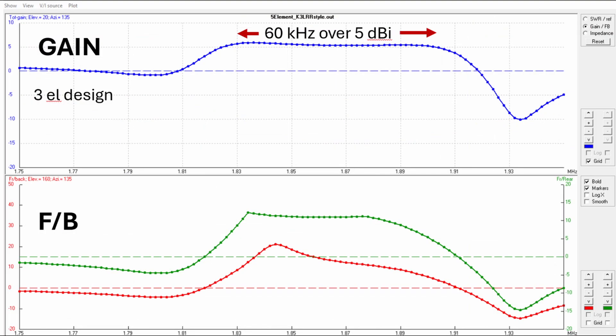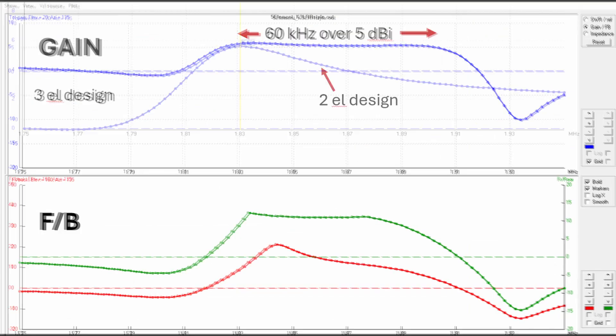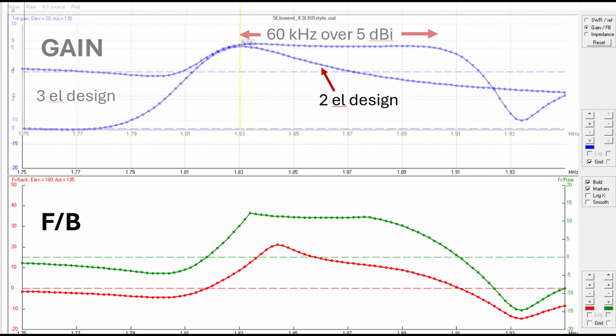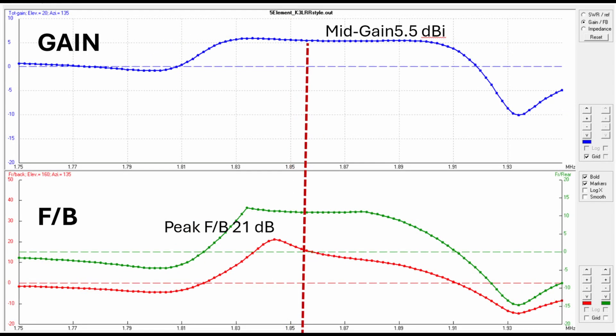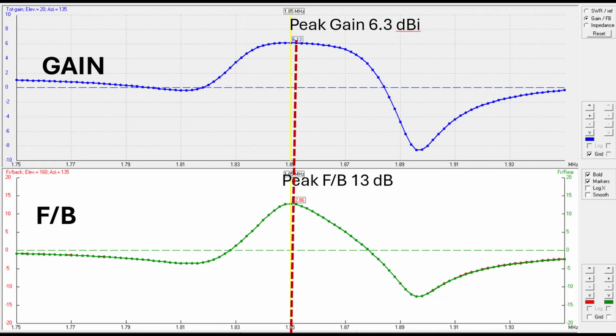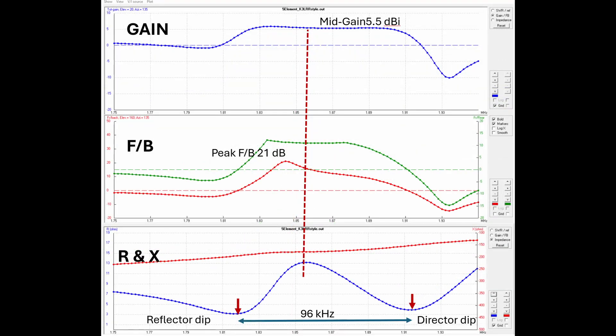Now unlike a two-element design, the three-element array has much better gain performance. That extra director element really smooths and expands the gain bandwidth as shown here. Now optimizing a three-element parasitic in the field is not a complex task. The only variable is how far apart you tune the reflector and the director resonances. There's no other variable. How far apart are these two R dips? Now I'm assuming of course equal element spacing.